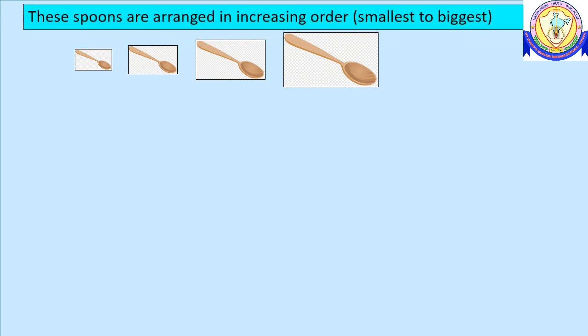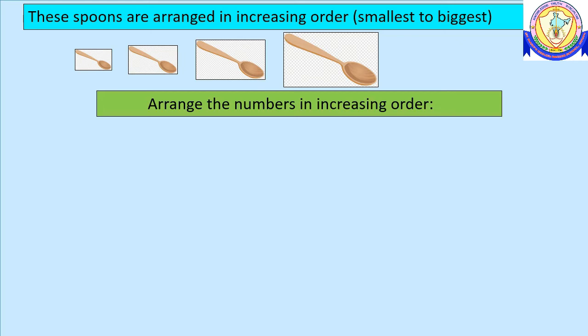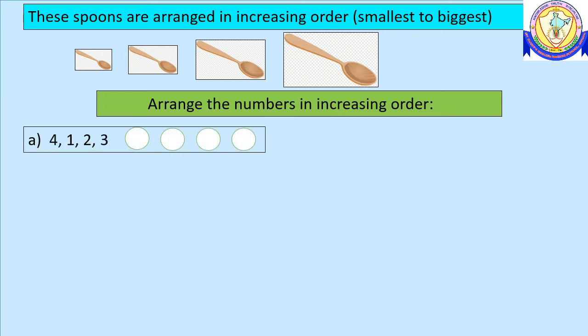Look at these spoons — they are arranged in increasing order, meaning smallest to biggest. Let's understand with more examples. Arrange the numbers in increasing order: we have the numbers four, one, two, three. Increasing order means smallest to biggest. The smallest number is one, next is two, then three, and the last number is four.